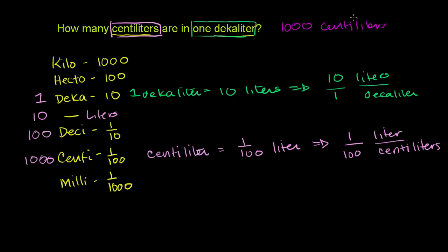The other way to do it is to convert a decaliter to liters and then convert liters to centiliters. Whenever you do unit conversions, make sure it makes sense. Sometimes people divide instead of multiply and get something like '1 decaliter equals 1 thousandth of a centiliter' — but no, a decaliter is a much larger unit than a centiliter, so 1 decaliter has to be a large number of centiliters. Always do that reality check when dealing with units.